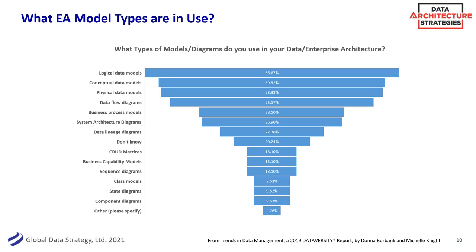Other popular diagram types include data flow diagrams, business process models, and system architecture diagrams. If you look a little lower, you'll see things like business capability models and CRUD matrices. I found this heartening — a lot of people are looking holistically at data as part of the larger organization. A lot of that is driven by companies trying to be more data driven, which speaks to how we show data in a business context.